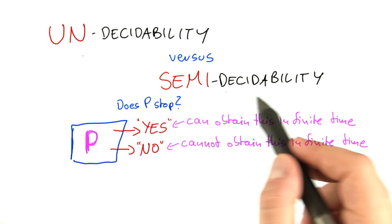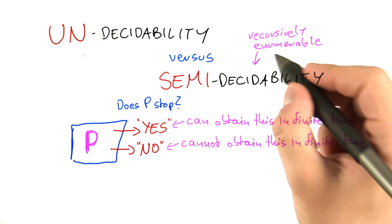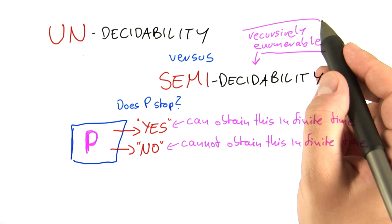But semi-decidable problems have a very interesting property called recursive enumerability. Now, that sounds a bit strange. What does that mean?